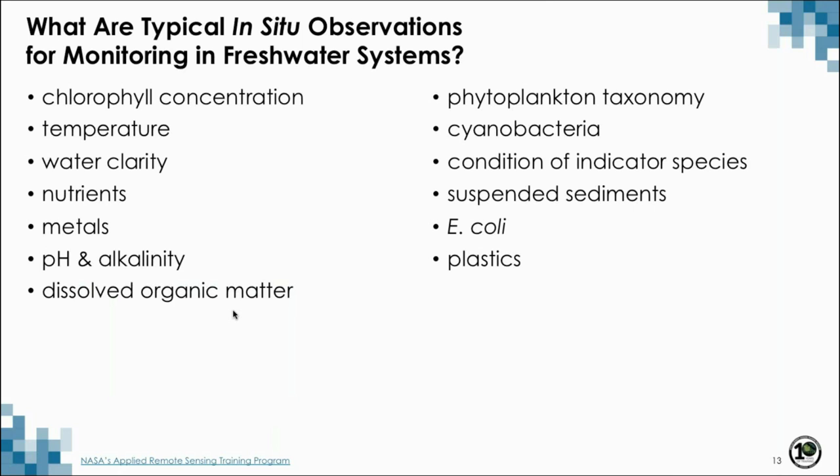What are some typical in-situ observations for monitoring freshwater systems? A lot depends on what the particular problem is for your region of interest. Typical observations include chlorophyll concentration, water temperature, water clarity, nutrients, metals, pH and alkalinity, dissolved organic matter, phytoplankton taxonomy, cyanobacteria, indicator species like E. coli, suspended sediments, and plastics.